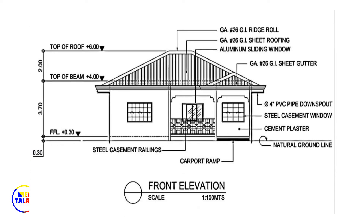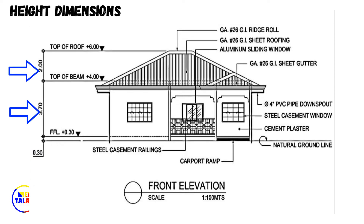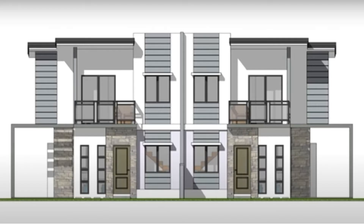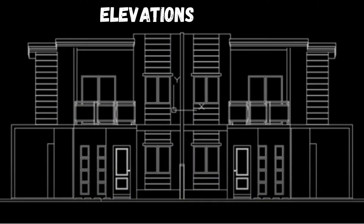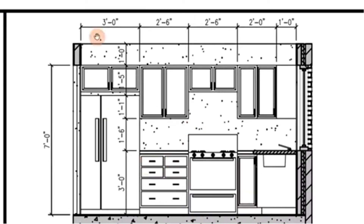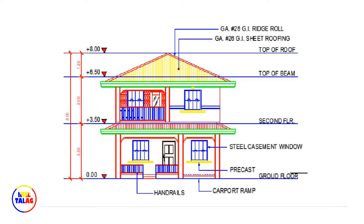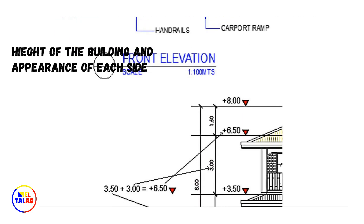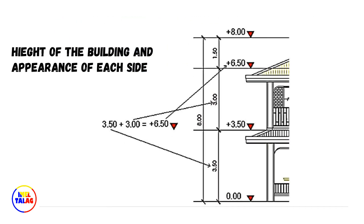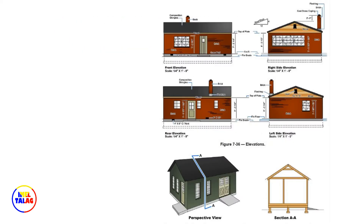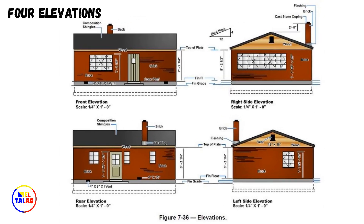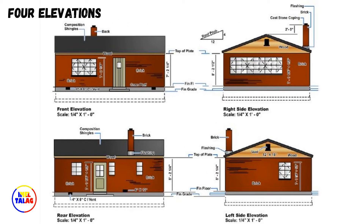An architectural elevation is a view of a building showing its height dimension. When elevations show the exterior of a residential unit, they are simply called elevations. Interior elevations show the inside of a building. Elevations are the exterior views of a building; they are necessary in as much as they show the height of the building and its appearance on each side. Normally, the four elevations are sufficient to describe the appearance of the residential building.